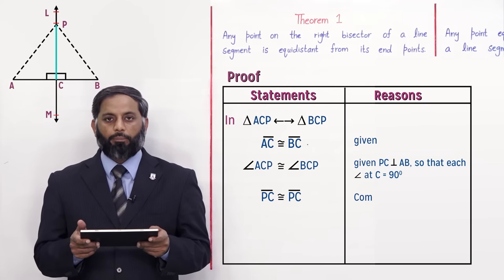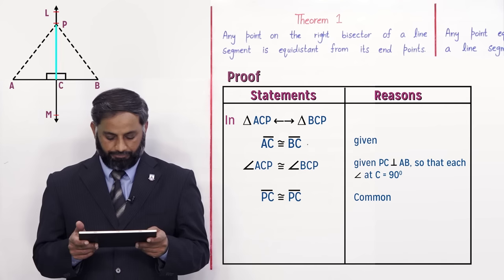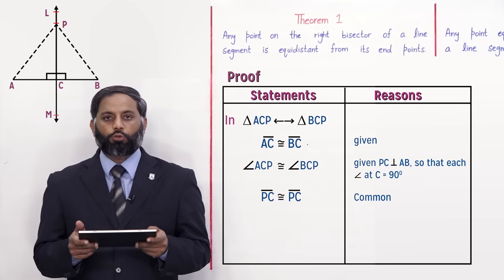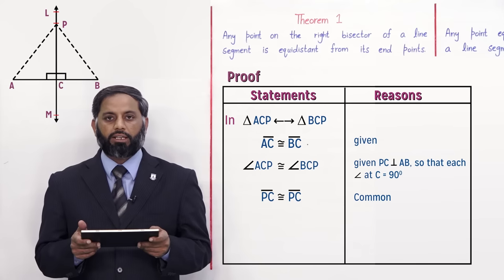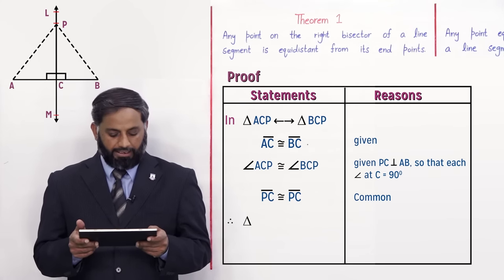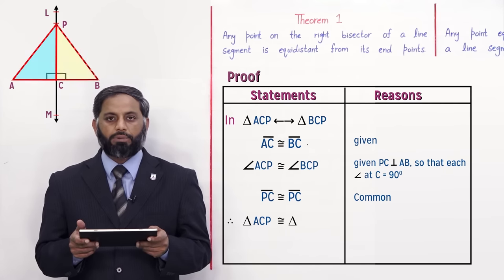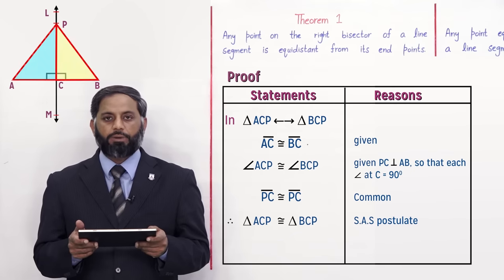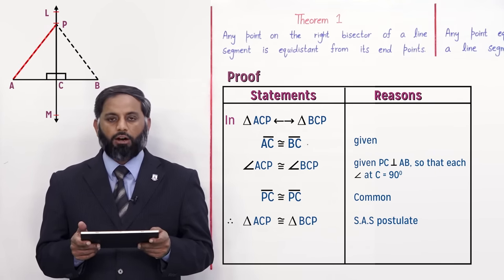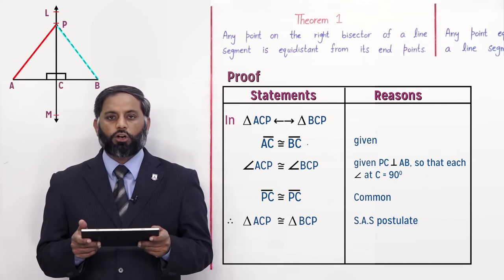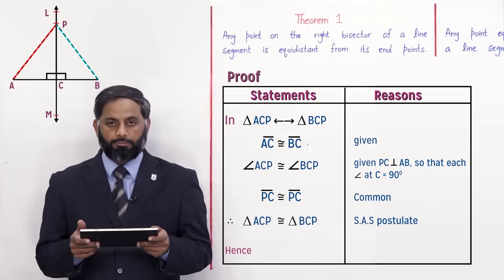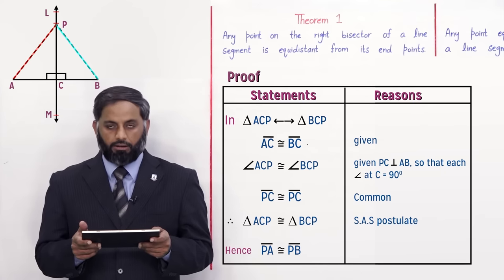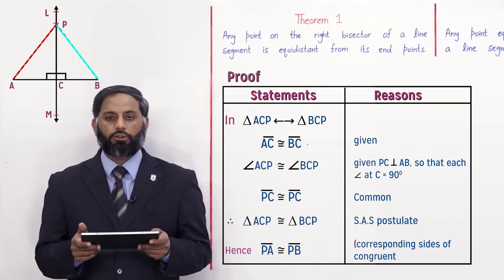By SAS postulate, the two triangles are congruent. Since the triangles are congruent, their corresponding sides are also congruent. PA and PB are the corresponding sides of both triangles. Hence PA is congruent to PB, and the reason is corresponding sides of congruent triangles.